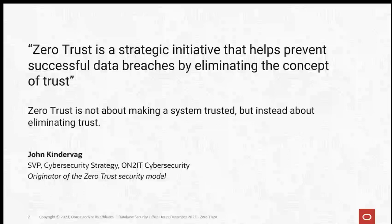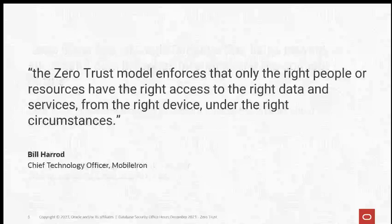John has since left Forrester and is now at On2its Cybersecurity, where he still talks and works a lot on the zero trust security model. Another way to look at zero trust — I'm going to quote from the CTO of MobileIron, a guy named Bill Herod — is that a zero trust model is designed to ensure that the right people or resources have the right access to the right data from the right device under the right circumstances. In Oracle terms, what Bill is talking about is the concept of a trusted path to data.